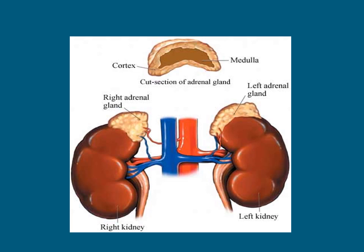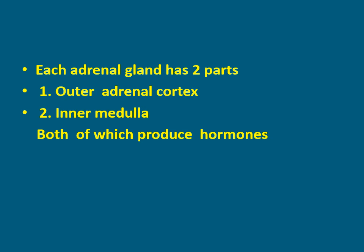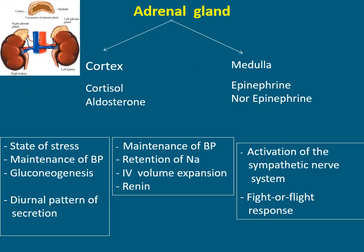The adrenal gland is a small triangular-shaped gland situated above the kidneys. Normal adrenal gland weight is 6 to 11 grams each. These are the parts of the adrenal gland: the first part is the cortex, the second part is the medulla. Each adrenal gland has two parts — the outer adrenal cortex and the inner medulla — both of which produce hormones. The cortex produces cortisol and aldosterone; the medulla produces epinephrine and norepinephrine.